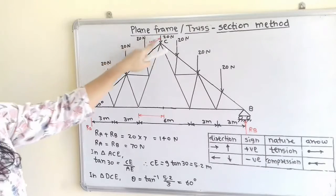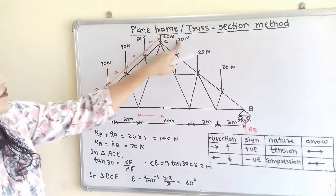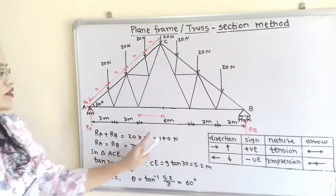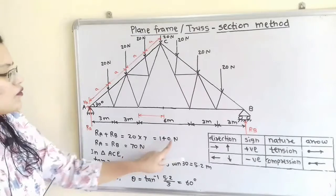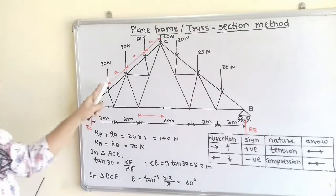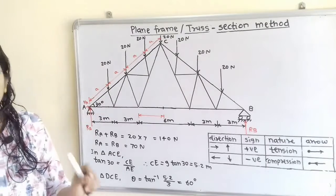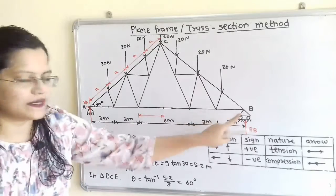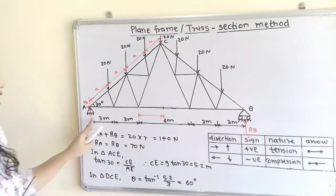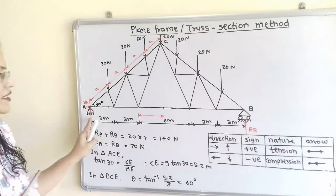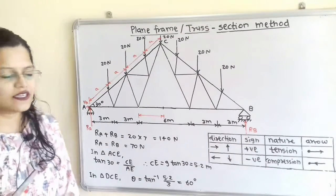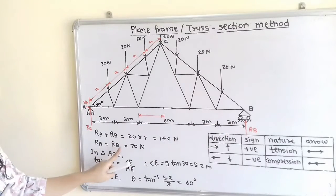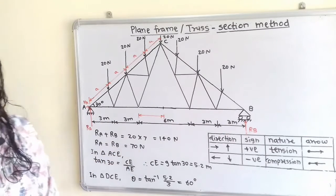There are 7 forces of 20 N each acting downward, giving minus 20 × 7. Taking the 20 × 7 term to the right-hand side gives 140 Newton. This total load of 140 N is carried at the two endpoints A and B. Since the load is equally distributed, RA equals RB, therefore RA equals RB equals 70 Newton.